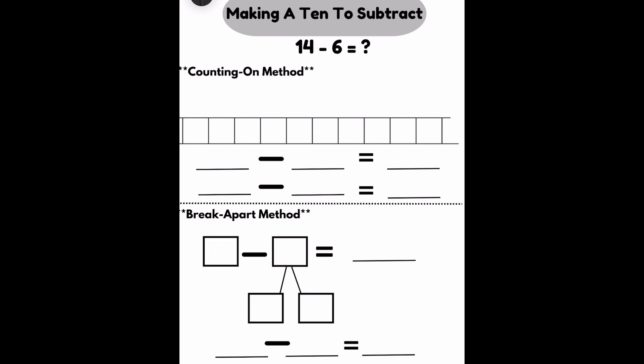Counting on is the same idea. I'm going to end at 14. I'm going to count my way backwards. We're making a 10. So I need to go from 14 to 10. I need to know how many back I'm going. 1, 2, 3, 4. I went back negative 4.